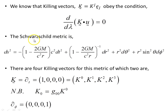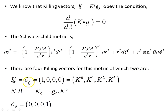The Schwarzschild metric is this object here, and there are four Killing vectors for this metric, which we've seen in a previous video. Two of them are here: k is this basis vector — a directional derivative pointing in the t-direction — and this, just to show you, is an upper index object.